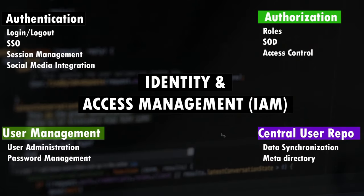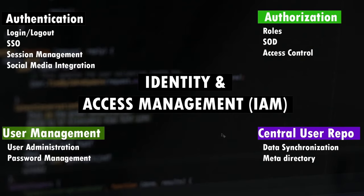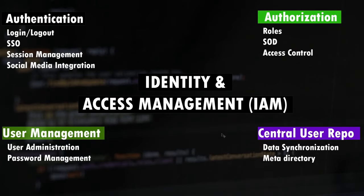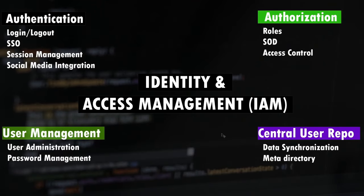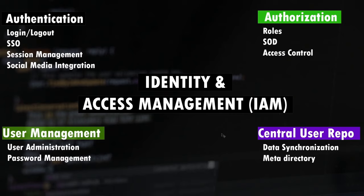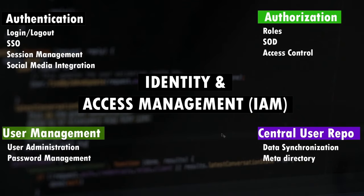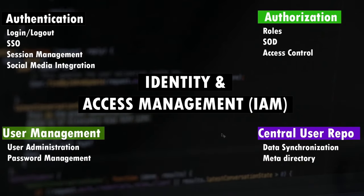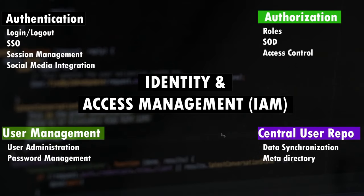Speaking of authorization — a lot of users confuse authentication and authorization. Authentication only deals with login and logout, whereas authorization describes what the user can see or do in your application. We achieve this by assigning roles to users. Not every user is the same — you might have an administrator who needs elevated access, or a subscriber who just wants to explore content. By assigning different roles, we can achieve segregation of duties and restrict what users can and cannot do on your platform.